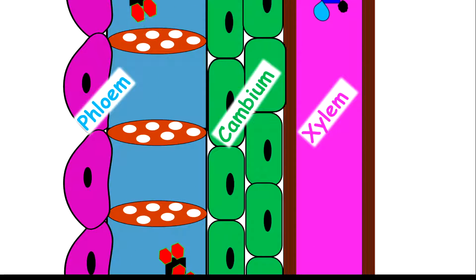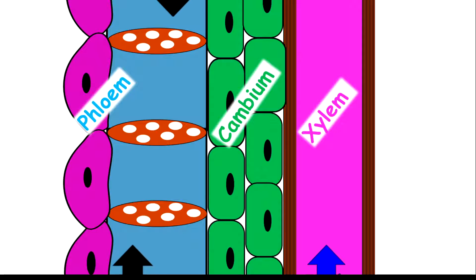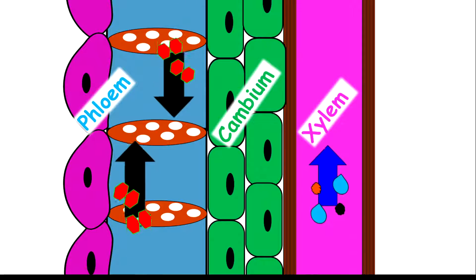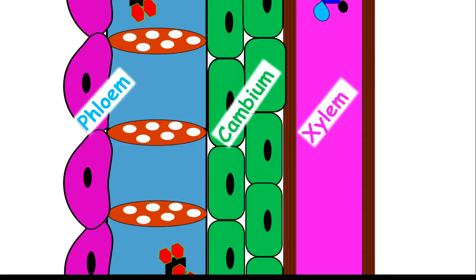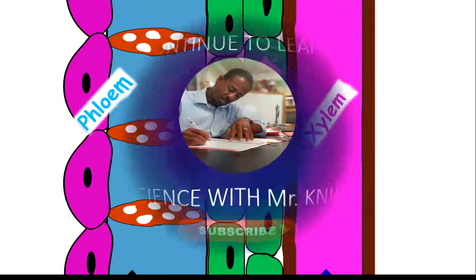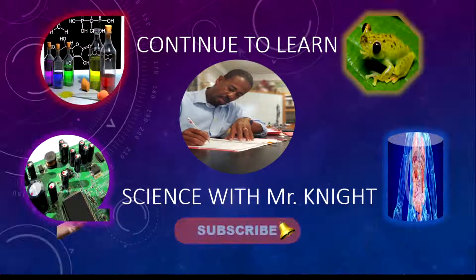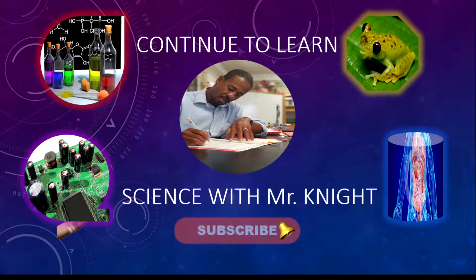The xylem transports water and mineral salts, while the phloem transports sugars and nutrients. I hope you now understand the movement of substances throughout plants. We are at the end of the lesson — stay safe until we meet again.